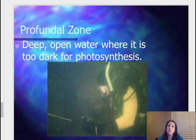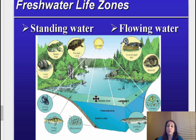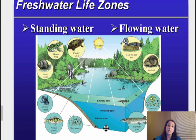Then you have your profundal zone — it's deep water, too dark for photosynthesis, and there's a decrease of dissolved oxygen. Here's a picture showing each layer: a lot of biodiversity by the shore in the littoral zone; out in the limnetic zone there's a lot of photosynthesis because sunlight can penetrate — this is the euphotic zone. Then you have your profundal zone where dissolved oxygen decreases and it's too deep for photosynthesis to occur.